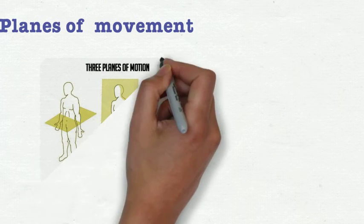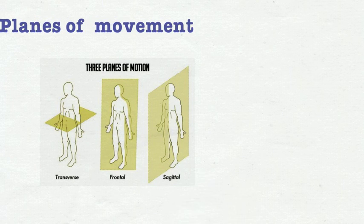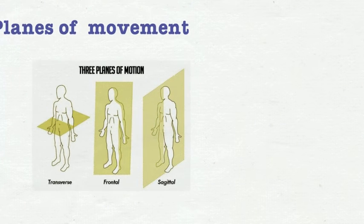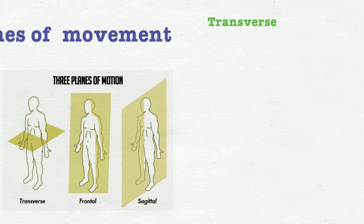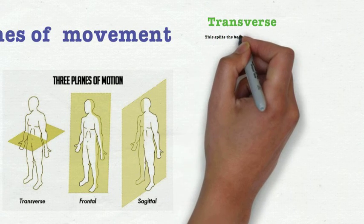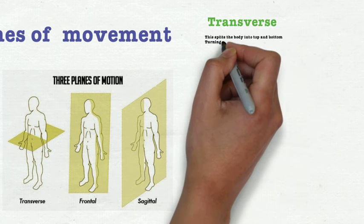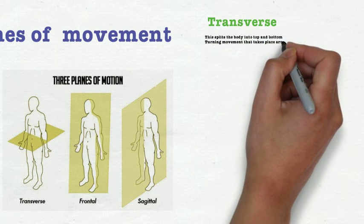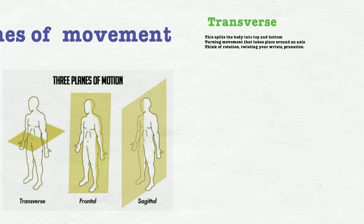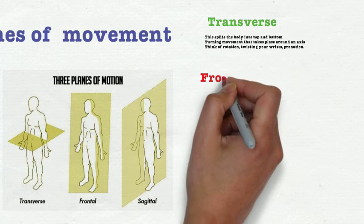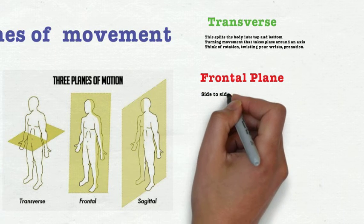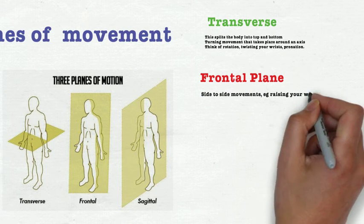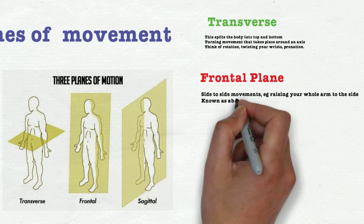So the next thing we're looking at is the planes of movement. And these are very important and new for this specification. We have the transverse, the sagittal, and the frontal plane. So the transverse plane, this is where we're allowing a type of rotation to take place. And this could be moving our wrists. It could be like a twisting action. We also have the frontal plane. And for this one, you're looking at side to side movements.